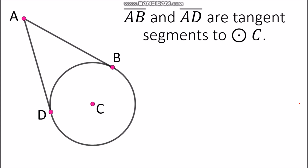To further understand the theorem, let's take a look at this example. We have circle C, and segment AB and segment AD are tangent segments to circle C. As you can notice, both tangents are coming from an external point, which is point A.